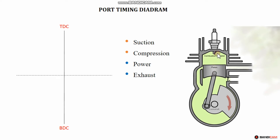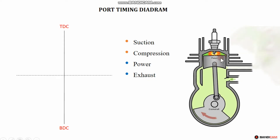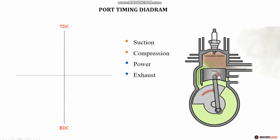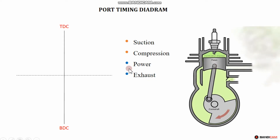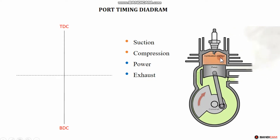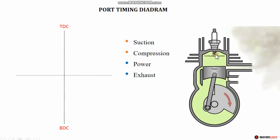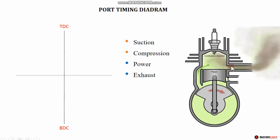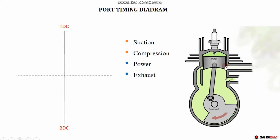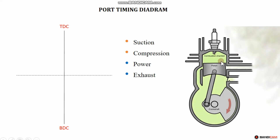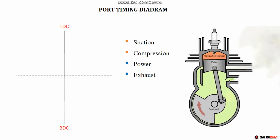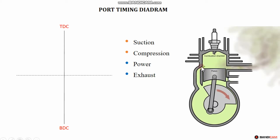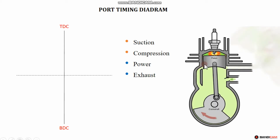The main key is the power stroke. When the power stroke occurs, the exhaust port will open, and the exhaust gas is expelled. The fresh charge gets the air and fuel mixture in.